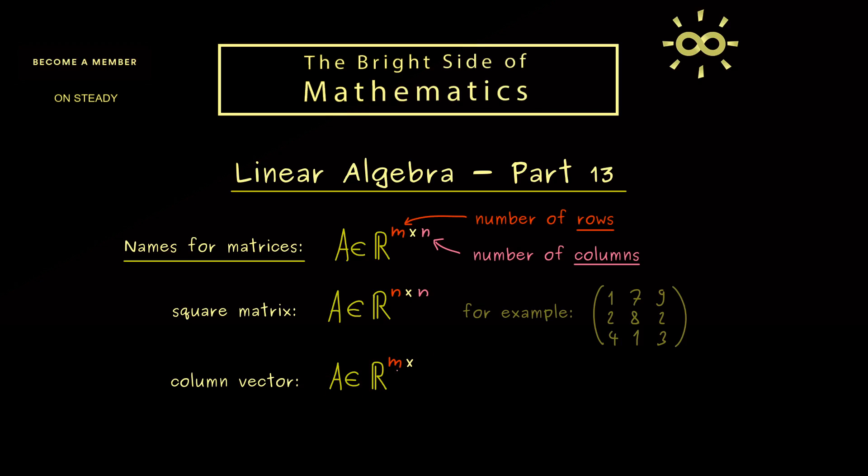So the height of the matrix is still m but the width is just 1. So for example that could be a 2x1 matrix. So you see this is exactly how we would denote an element in R^m and in the end we will see that the same notation here is not a problem at all.